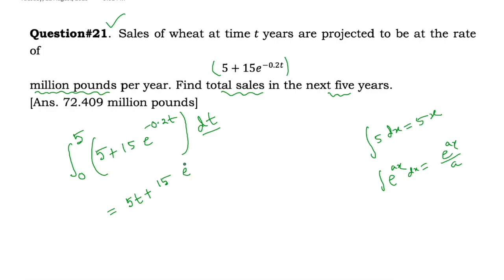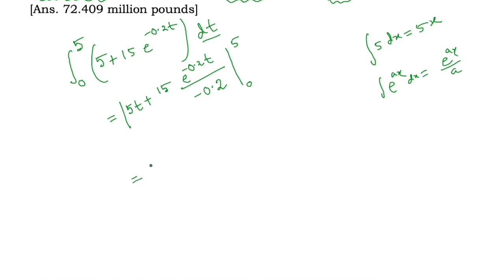So the integration gives e to the power minus 0.2t divided by negative 0.2, evaluated from lower limit 0 to upper limit 5. This simplifies to 5t minus 15 divided by 0.2 times e to the power minus 0.2t, since the product of plus and minus gives minus.